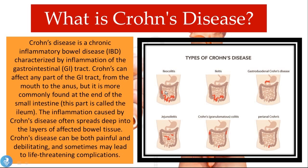The specific types include ileocolitis, meaning inflammation of both the ileum and the colon; ileitis, which is inflammation of the ileum alone; gastroduodenal Crohn's disease, involving the stomach and duodenum; jejunoileitis, affecting the jejunum and the ileum; granulomatous colitis, where granulomas occur in different parts of the colon; and finally perianal Crohn's, affecting the terminal part of the large bowel.